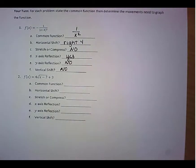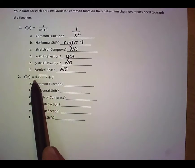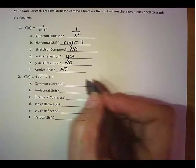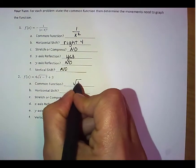Okay, so for our second example here on the year turns, you have 4 times the square root of x minus 7 plus 3. So our common function is the square root of x.